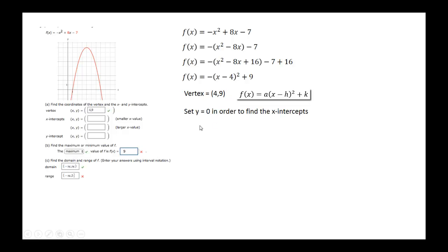In order to find the x-intercepts, we should set y equal to 0. So we'll plug 0 in for f(x), add x minus 4 squared to both sides, which will result in the equation x minus 4 squared equal to 9.